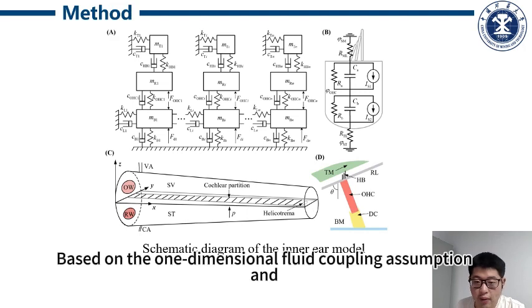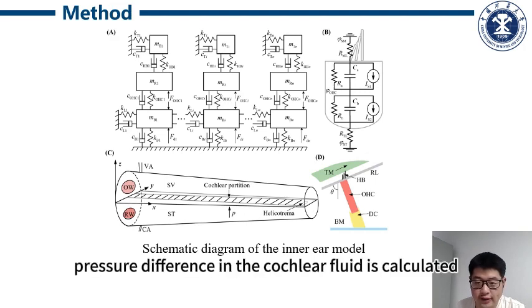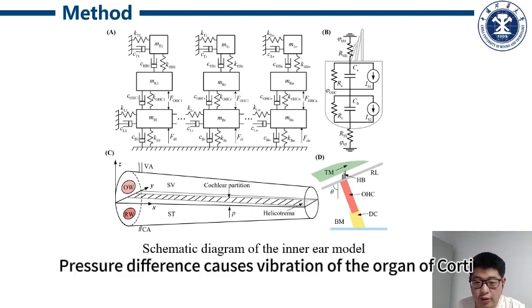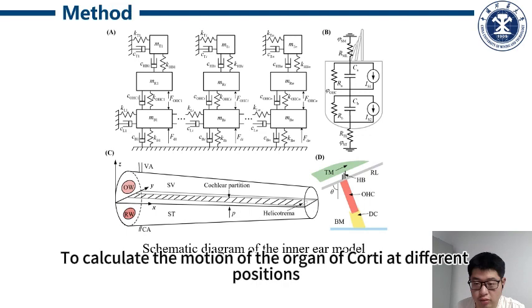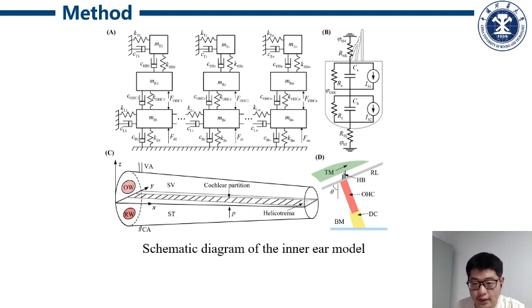Based on the one-dimensional fluid coupling assumption and the cochlear fluid acceleration, the pressure difference across the cochlear fluid is calculated. The pressure difference causes the vibration of the basilar membrane. To calculate the motion of the basilar membrane at different positions, the cochlea is divided into 100 segments.